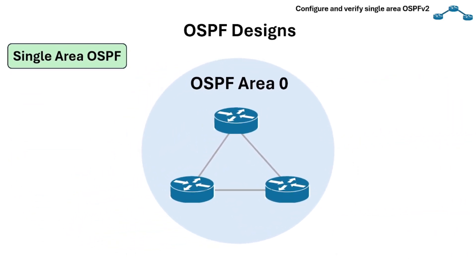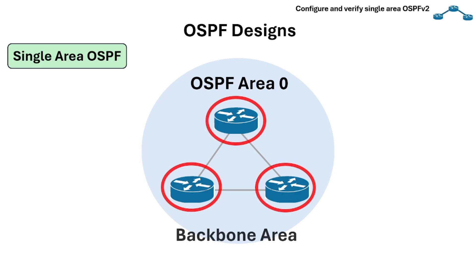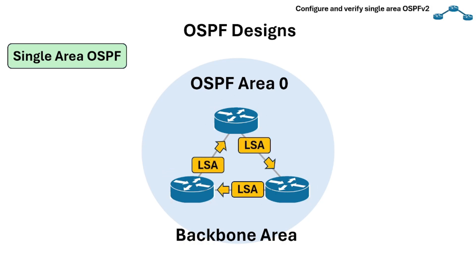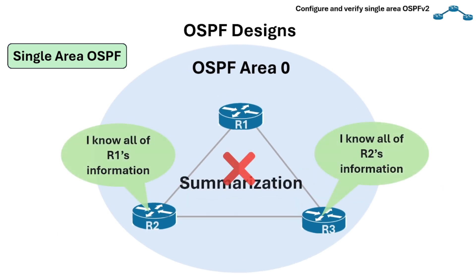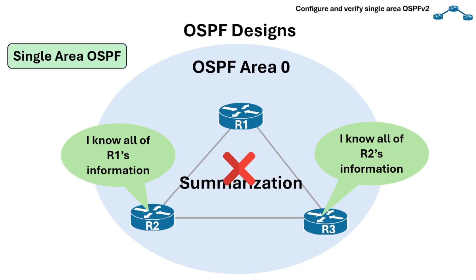Let's start with single-area OSPF. This design is best for smaller networks where all routers can maintain consistent, full knowledge of the entire network topology. The main characteristic is that all routers are configured to be part of a single OSPF area, typically area 0 or the backbone area. LSAs are flooded throughout the single area. The advantage is that it's easier to configure and troubleshoot compared to a multi-area design, and every router has complete information, which can lead to optimal path selection without summarization needs.